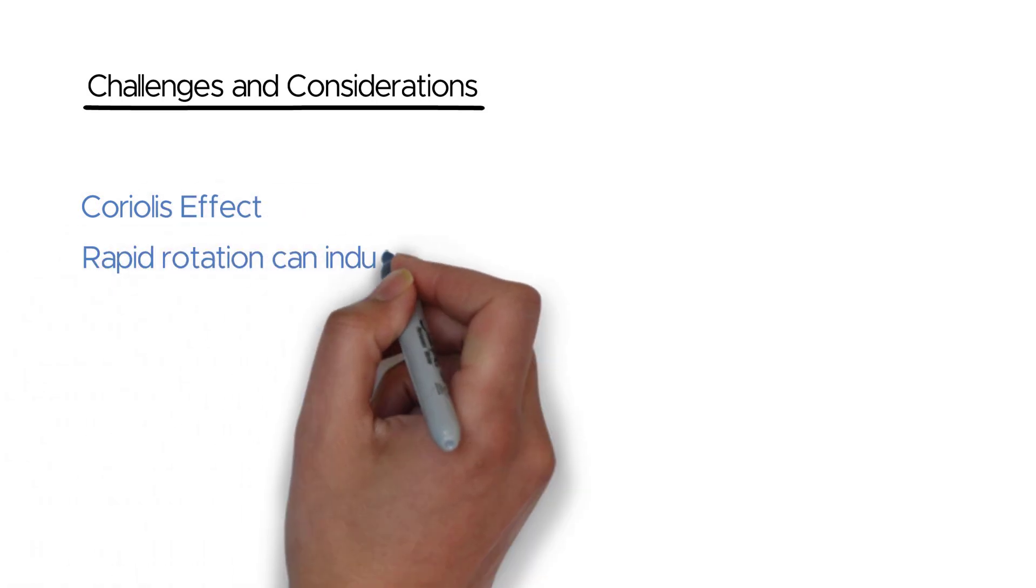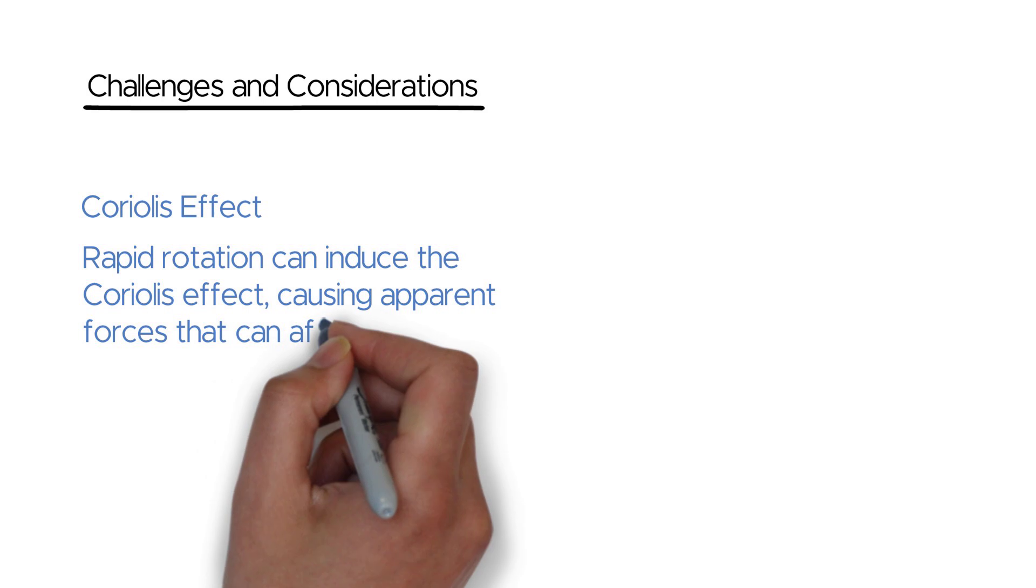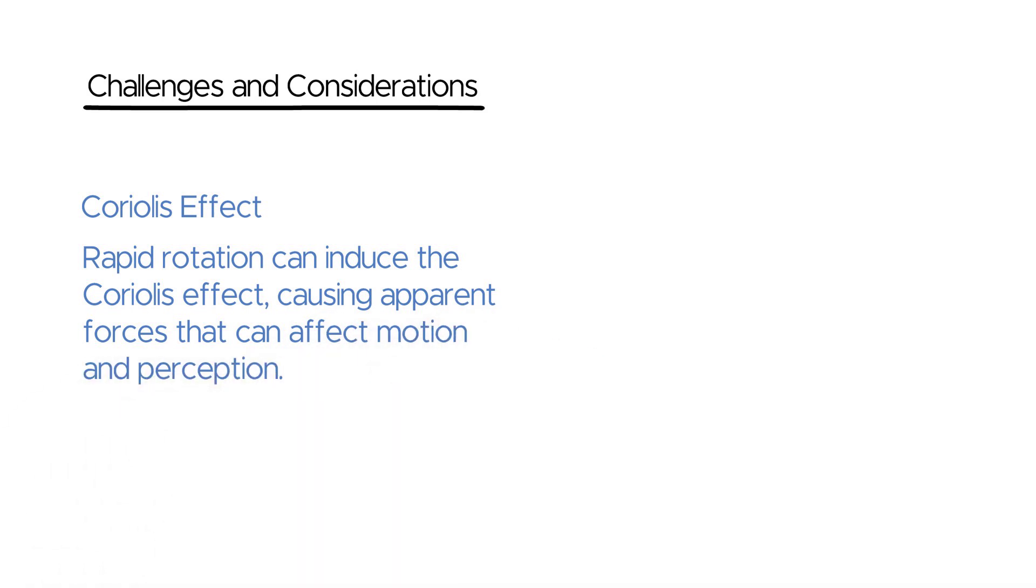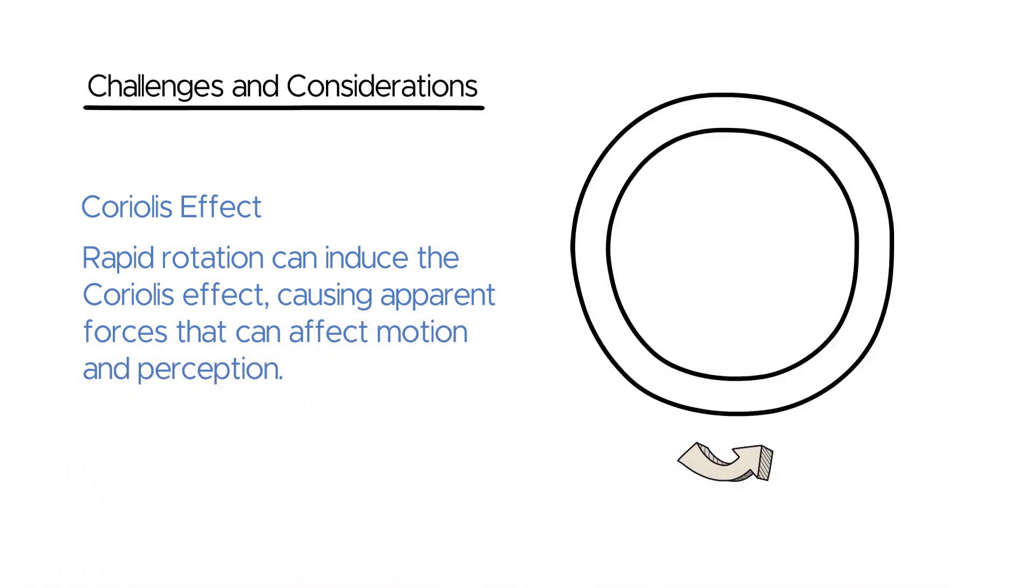Coriolis Effect: Rapid rotation can induce the Coriolis effect, causing apparent forces that can affect motion and perception. Designing the rotating space station to minimize these effects is crucial for occupant comfort and safety.